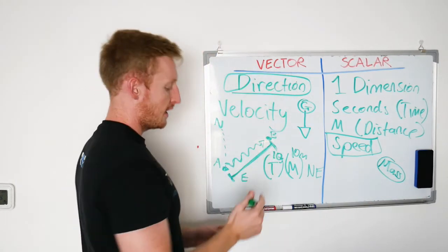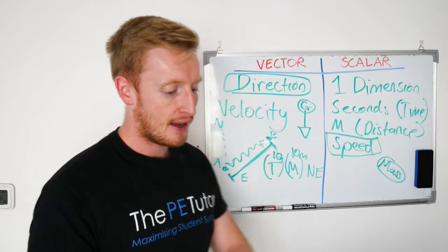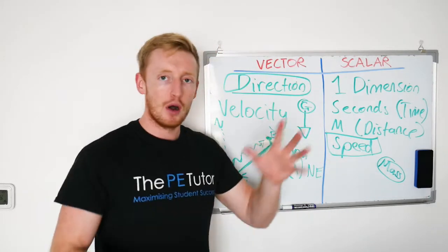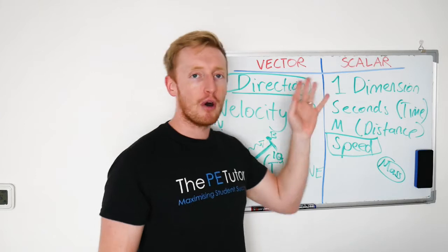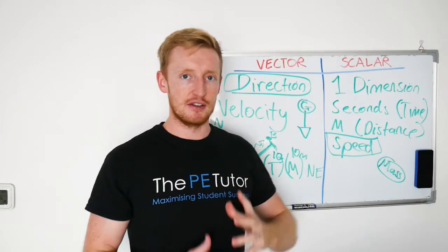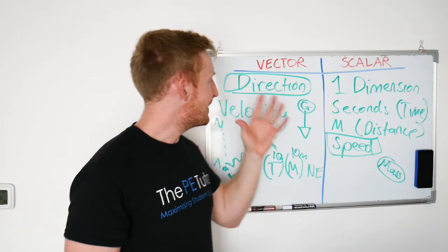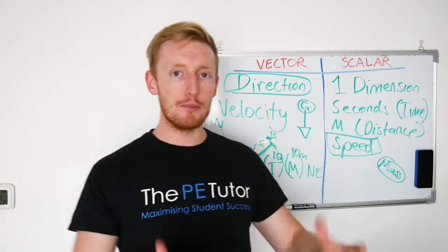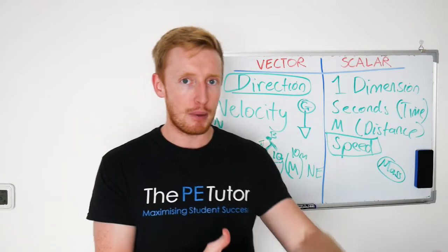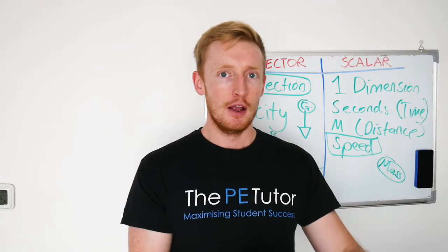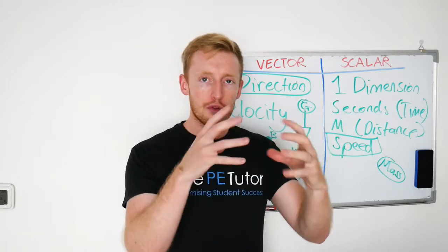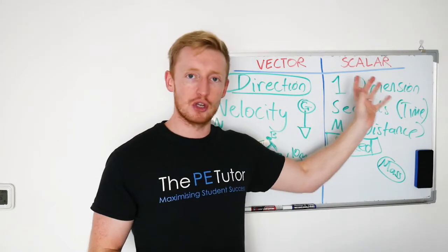When we're talking about vector and scalar in sport, quite often open environments involve far more vector quantities and vector measurements. Things like throwing a ball accurately, hitting an object, or making a pass — we're dealing with vectors because there's more than one dimension in play.